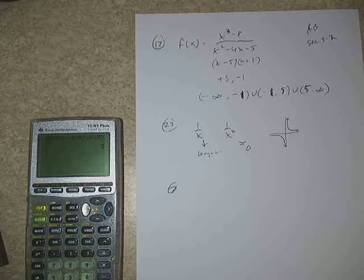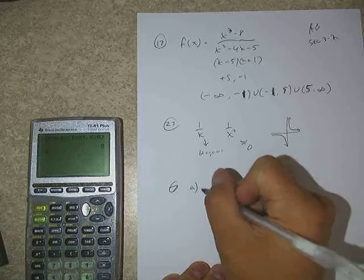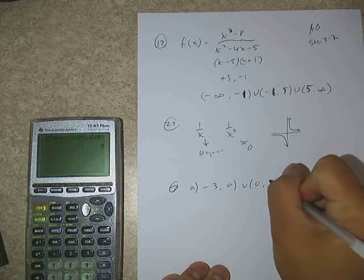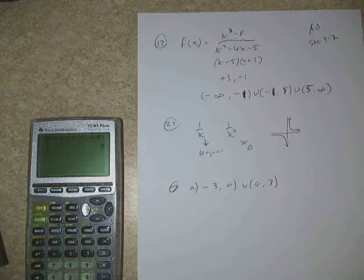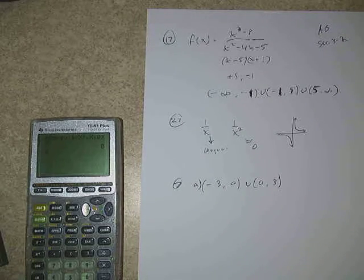Number 7 says we have this graph on a closed interval. At what domain point does the function appear to be differentiable? So it looks like the differentiable part would be from negative three to zero and from zero to three. How about continuous but not differentiable? Where is the function continuous but not differentiable?